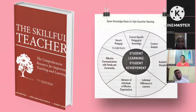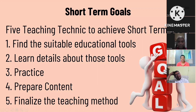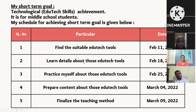We learned about student learning and student achievement. There are seven knowledge bases for high-expertise teaching — seven points on how to become a skillful teacher. There are also 10 topics of teaching covering what we should do for professional knowledge and skill. My short-term goal in the program was to find suitable educational tools — basically online and technological tools — learn about them, practice, prepare content, and finalize my teaching method. I completed this short-term goal by the deadlines, during my time at the University of Nevada, Reno.